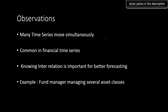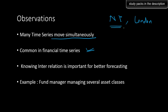From the two graphs in the previous slides, we observe that many time series move simultaneously, so we can make use of other time series to forecast a given time series. This happens mostly in financial time series — one stock market will get affected by the movement in another stock market. For instance, the New York stock market will get affected by fluctuations in the London stock market. The time series data from the New York stock market can be used to forecast stock index values or stock prices in the London stock exchange. Knowing the interrelation is very important for better forecasting.